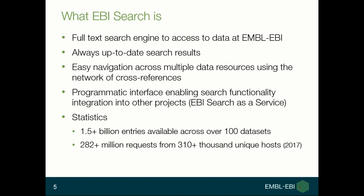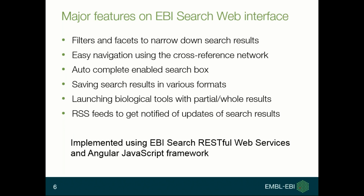Now I'm going to talk about the web interface first. We provide these features through the web interface. As we have a large amount of data, we provide filters and facets to narrow down search results. We also provide a cross-reference network for easy navigation. If you type something into our search box, you can get suggestions. If you need to save search results, you can do that in various formats. Depending on which dataset your search results come from, you can launch biological tools. And if you need to get notified of any updates to a particular search result, you can use our RSS feed.